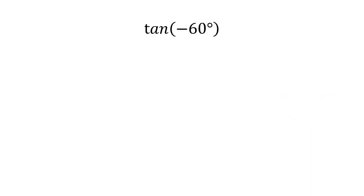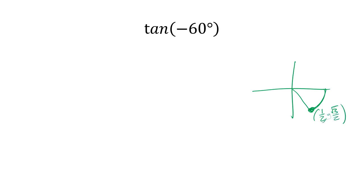Tangent of negative 60 degrees. Negative 60 — we draw those angles clockwise, so the coordinates are (1/2, -√3/2). Tangent is y divided by x, so we have -√3/2 divided by 1/2, which is just -√3. The tangent of negative 60 degrees is -√3.